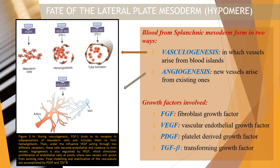The growth factors involved in blood vessel formation include FGF (fibroblast growth factor), VEGF (vascular endothelial growth factor), PDGF (platelet-derived growth factor), and TGF-beta (transforming growth factor beta). Vasculogenesis involves cells giving rise to new vessels, while angiogenesis — which can be found in cheek development — involves new vessels arising from existing ones.